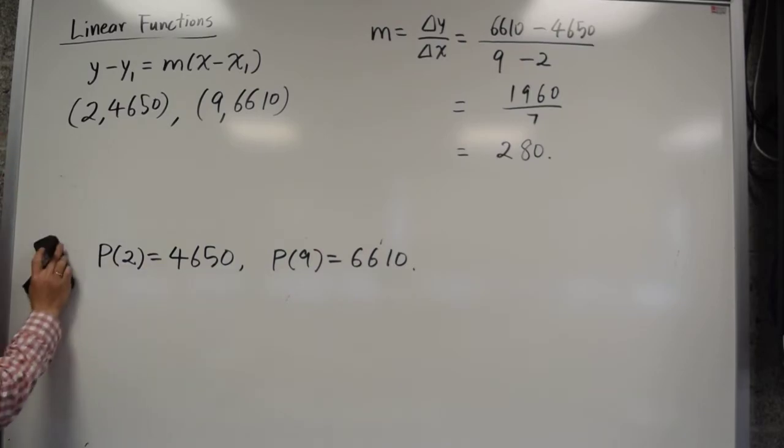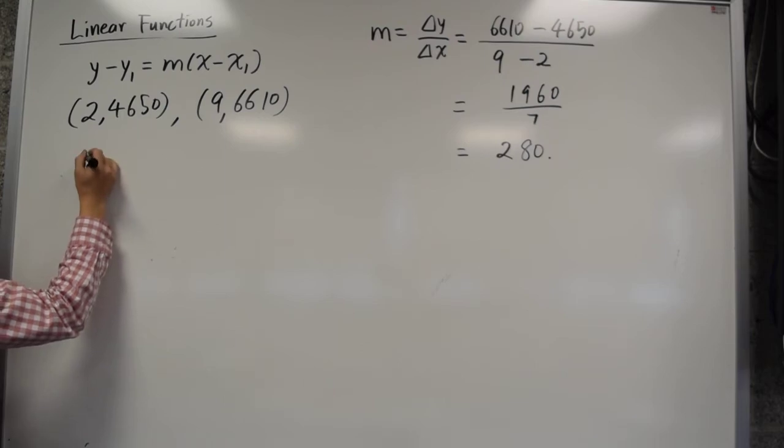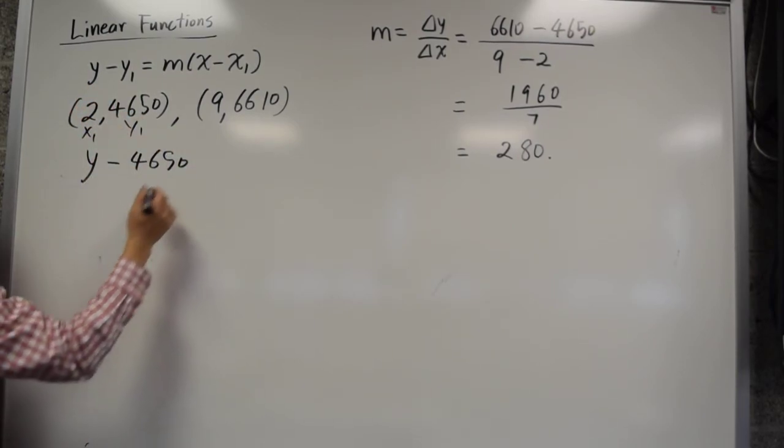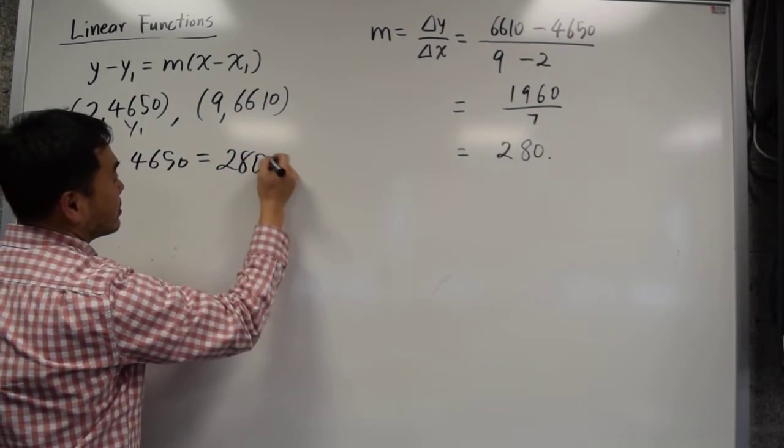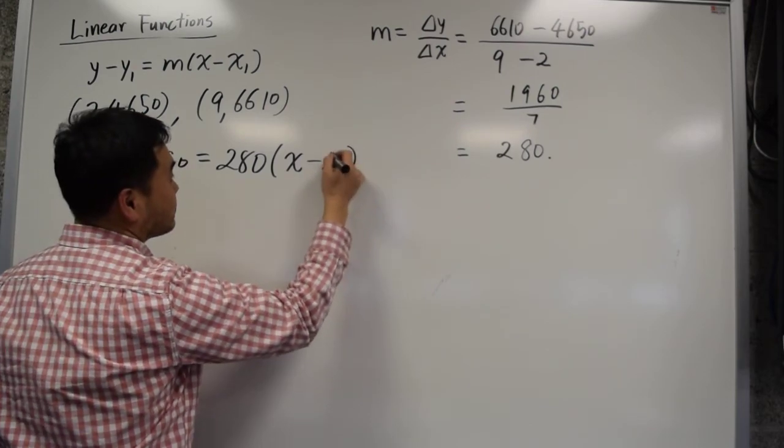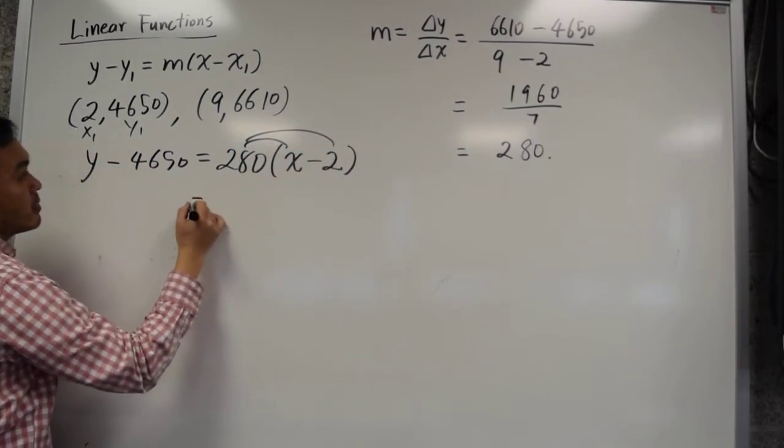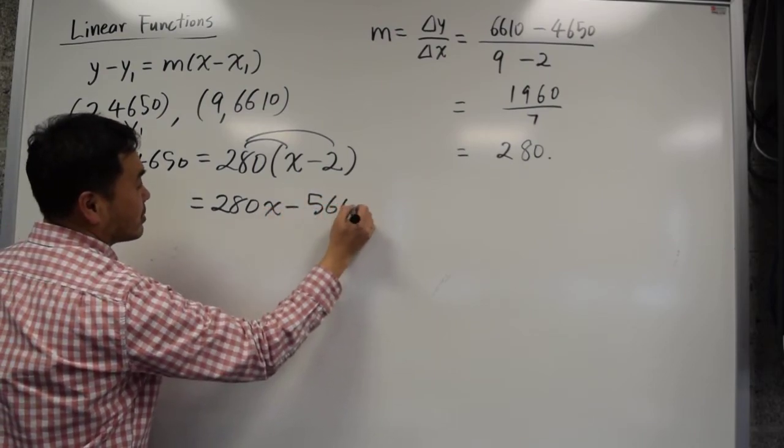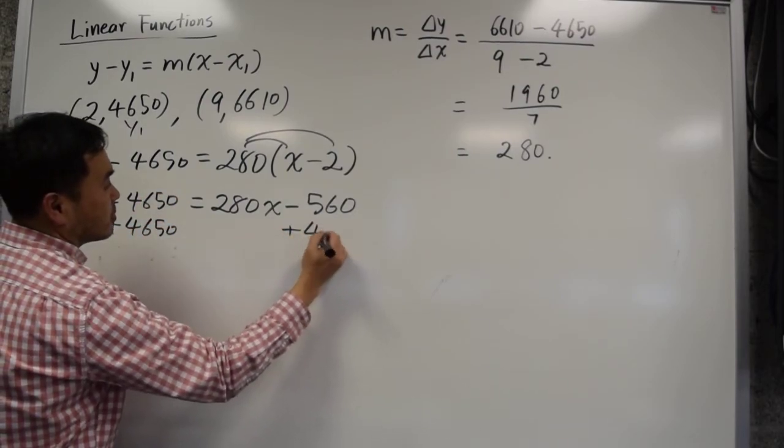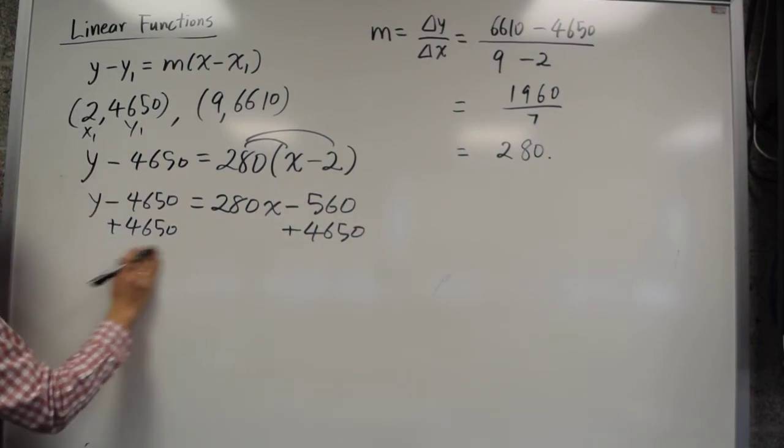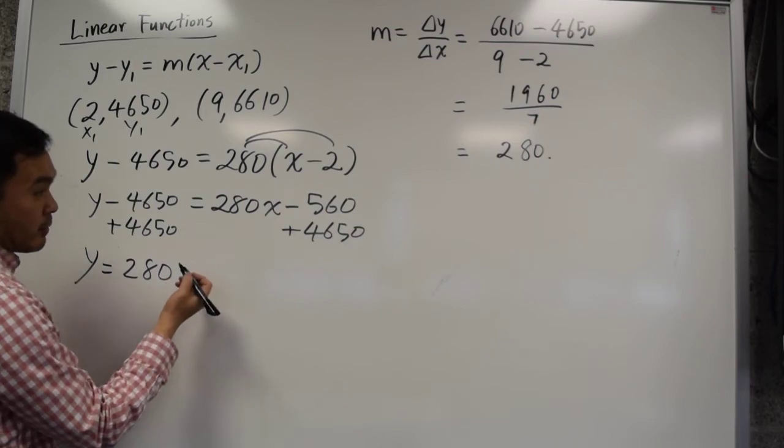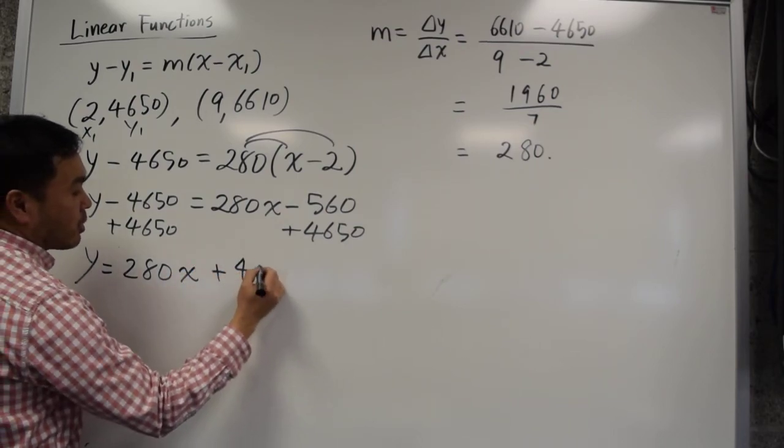Okay. So we have that, and then we plug everything in here. You get y minus 4650. We decided to call this one as x1, that as y1, right? Equals to m, which is 280, times x minus 2. Multiply: 280x minus 560, y minus 4650, plus 4650. And you get y equals 280x plus 4090.